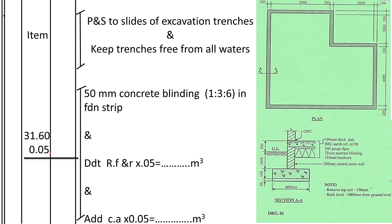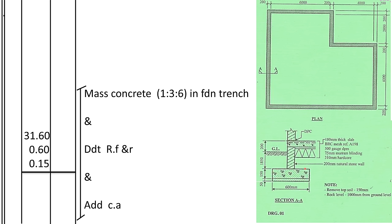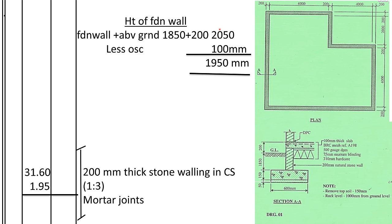For mass concrete in foundation trenches, we take center line × width of trench × thickness of concrete, 1:3:6 mix in foundation trench. Again, this concrete replaces soil, so we deduct the equivalent volume from refill-and-ram and add to cut away — the soil is no longer needed where the concrete sits.